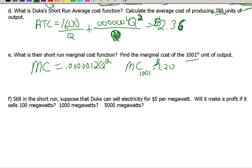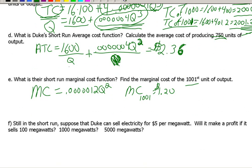Okay, so F, still in the short run. And suppose that Duke can sell electricity for $5 per megawatt. Will it make a profit if it sells 100, 1,000, or 5,000? Well, I'm going to have to take a break here, and I'll come back and make a second and a half to this video in a little while. So, see what you can do on this, and then I'll come back and finish this up in a little while.